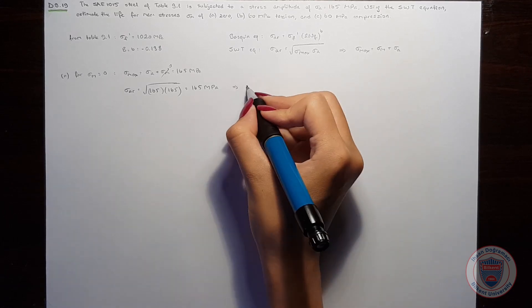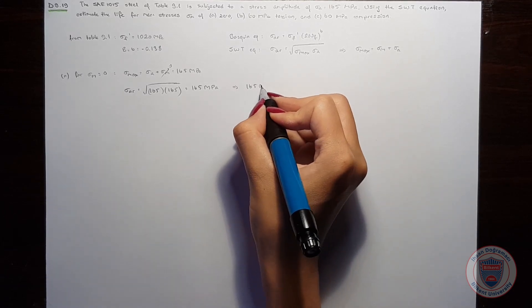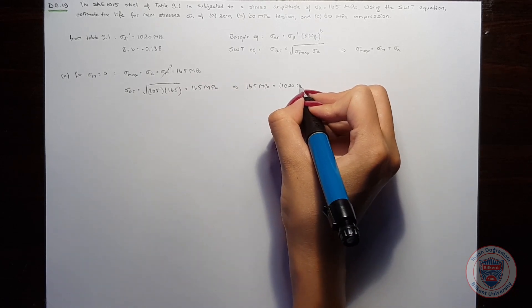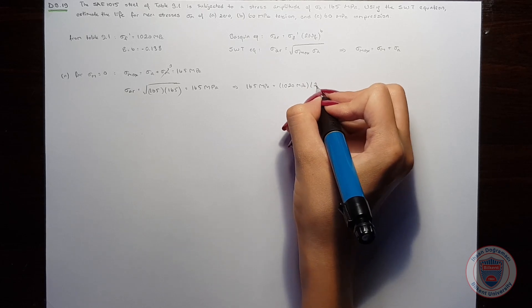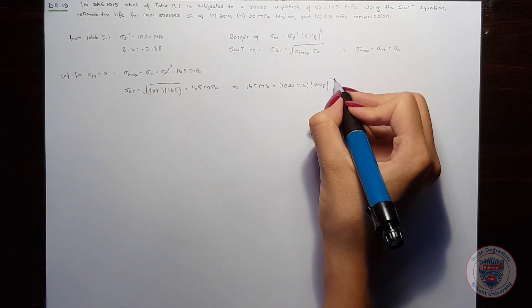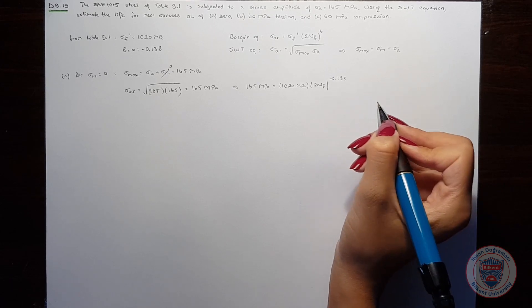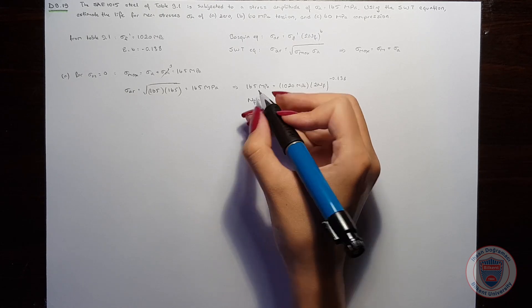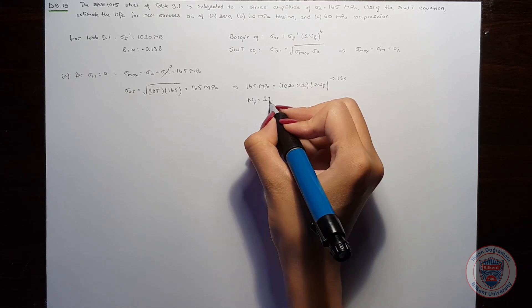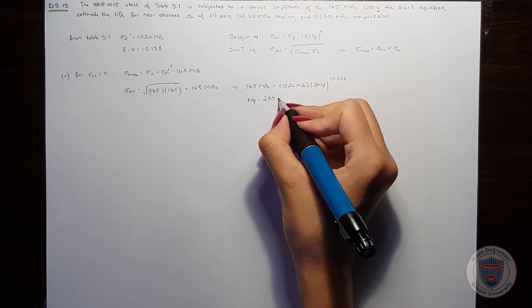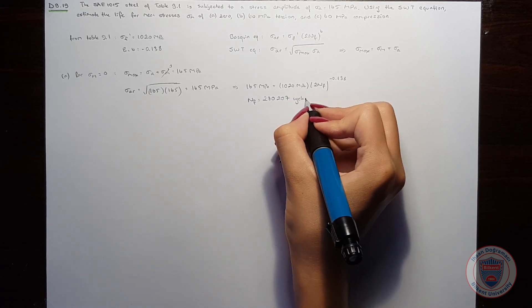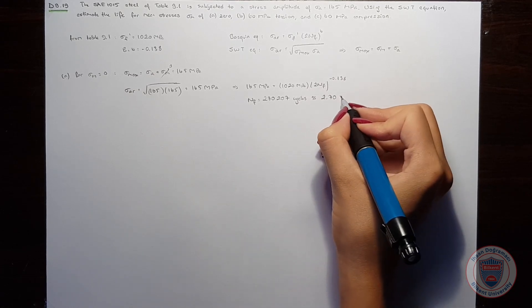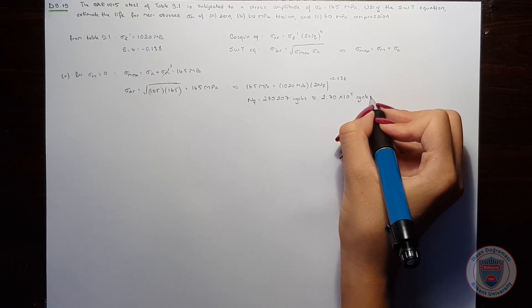Using Basquin equation, we will see that sigma AR will be equal to 1020 MPa times 2 times number of cycles to the power of minus 0.138. So that the number of cycles will be approximately 2.70 times 10 to the power of 5 cycles.